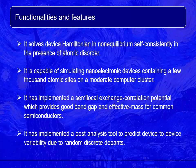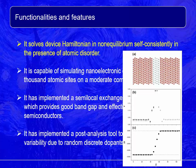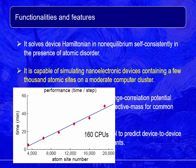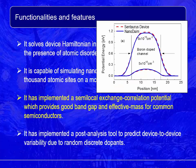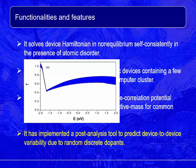Some notable functionalities and features of NanoDCIM are as follows. First, it solves the device Hamiltonian self-consistently in the presence of atomic disorder. Second, it is capable of simulating nano-electronic devices containing a few thousand atomic sites on a moderate computer cluster. Third, it has implemented a semi-local exchange-correlation potential, which provides good band gap and effective mass for common semiconductors. Fourth, it has implemented a post-analysis tool to predict device-to-device variability due to random discrete dopants.